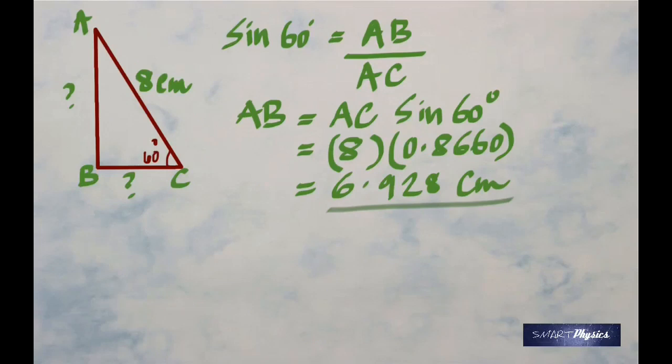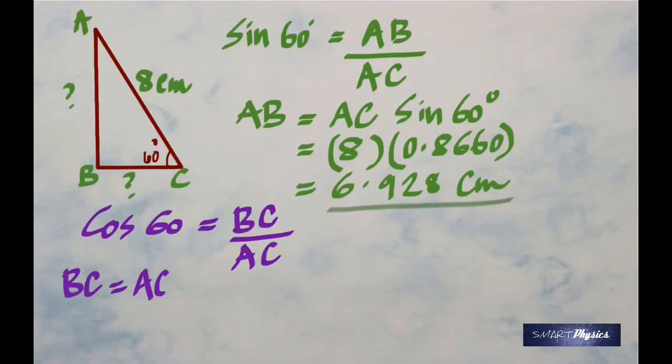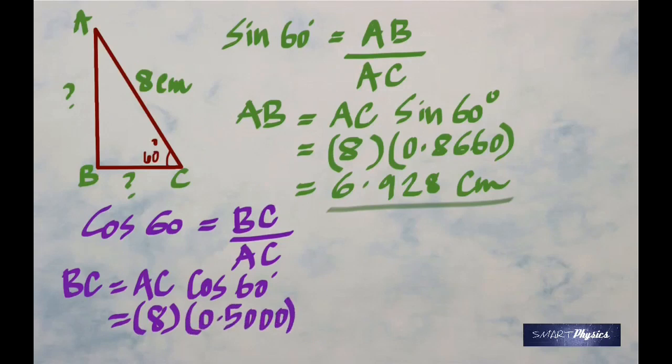That's AB. Now to find BC, what do you do? Take cos. Why? Because BC is the adjacent side. So when you take cos theta, which is cos 60 degrees, you get BC by AC. Therefore BC is AC times cos 60. AC is 8, so 8 times 0.500 from your calculator gives 4.000 cm.